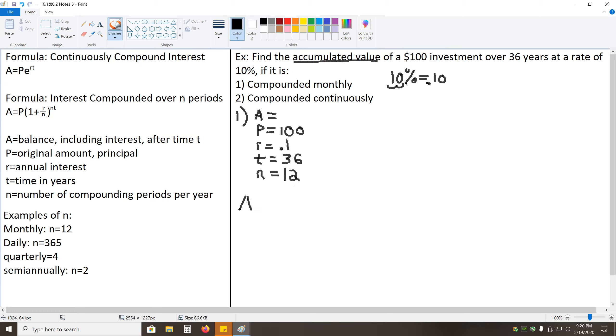So, putting all of this together, we have A equals P times 1 plus R over N is 0.1 over 12 to the N T is 12 times T is 36. And now there's nothing here that we can really simplify, so it's just a matter of plugging this into our calculator. And when you plug this into your calculator, you should end up getting A equals 3,605.63.